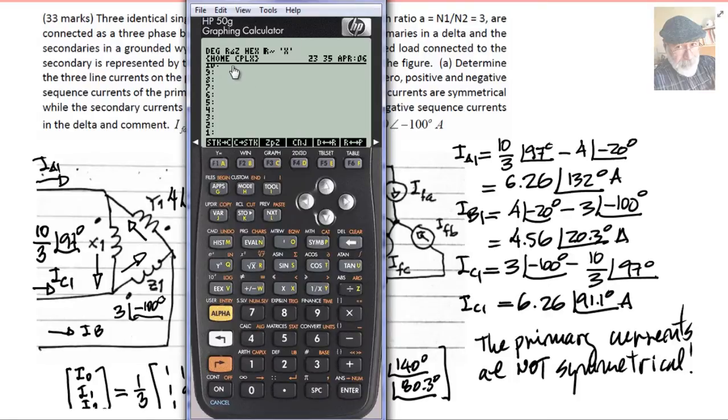First, I make sure the calculator is in degrees and in polar mode. And then I start with 10 space 3 divide 97 degrees A. That is the first current, and then the 4 with negative 20, enter. And the third one is 3 with negative 100, enter. I have the three currents in the delta.